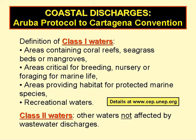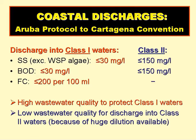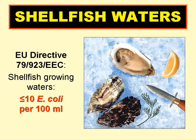Discharges from long sea outfalls are almost always into class 2 waters. The requirements of the Aruba Protocol are basically very sensible — strict quality requirements are applied when the discharge is into sensitive class 1 waters, but quite relaxed requirements when the discharge is into class 2 waters. Another example applying to coastal waters is for shellfish growing waters. In the European Union, the E. coli count in such waters should be no more than 10 per 100 ml.